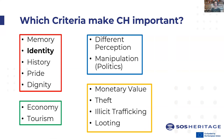Coming to the end of this introductory lesson, we can ask: which criteria make cultural heritage important? There are many criteria, but I've brought four main boxes as a kickoff. There's a box of memory linked to cultural heritage: memory, identity, history, pride, dignity — personal but also of peoples. There's an economy and tourism value. But there's also the different perception of cultural heritage — what heritage is important to whom, why it's important, and which history can be done or undone by emphasizing a particular cultural heritage. Cultural heritage also has a huge potential for manipulation, and we are talking politics here.